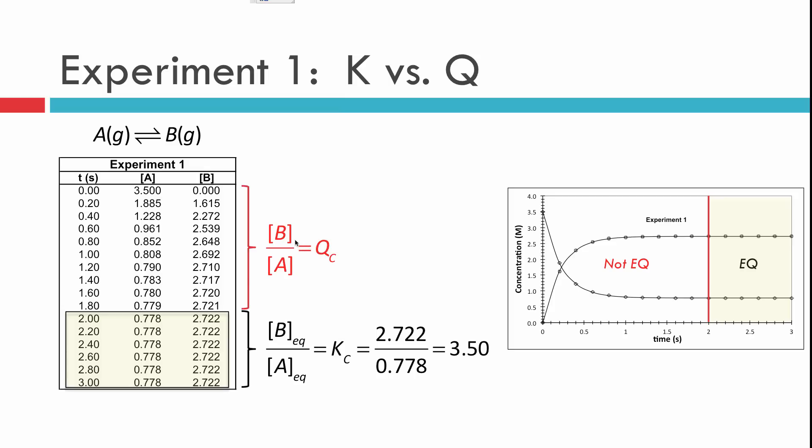And we're going to call this ratio the reaction quotient and give it the symbol Q sub c. So this quantity is describing the same thing as the equilibrium constant, only it does it at any time, while the equilibrium constant itself is only applicable to when the system is at equilibrium.